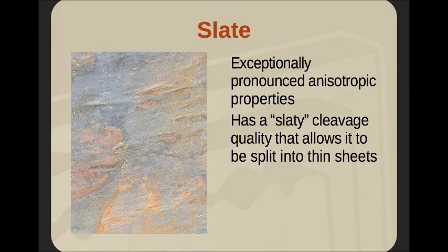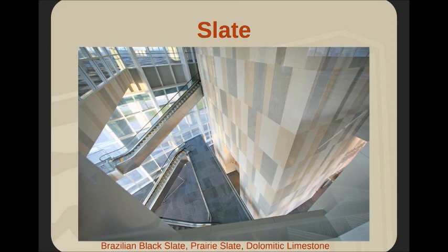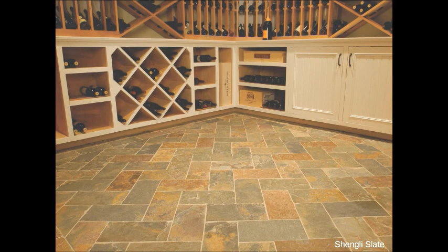Slate is exceptionally anisotropic — it has a slaty cleavage quality that allows it to be split into thin sheets. Exterior freeze-thaw is not kind to some of these materials. Some examples here include black slate, prairie slate, and dolomitic limestone. The multi-color Shangli slate is fantastic for interior applications but may not be right outside.